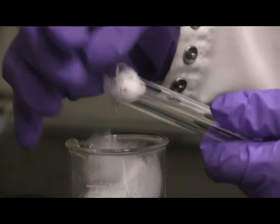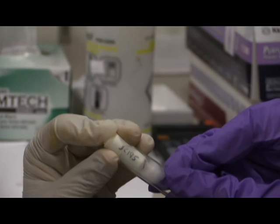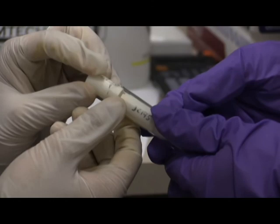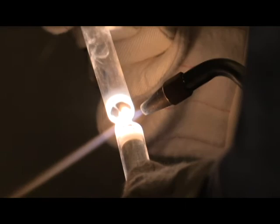Quartz wool insulates the tube and protects the crystal. The crucible enters the tube and is pushed to the bottom. A thin neck is made in the tube, directly above the crucible.